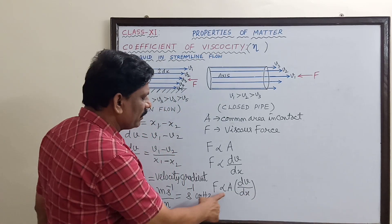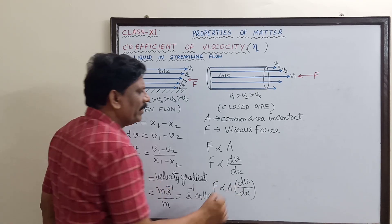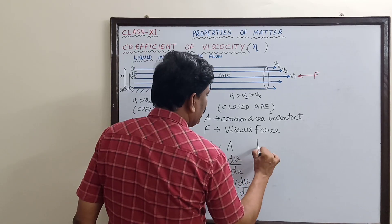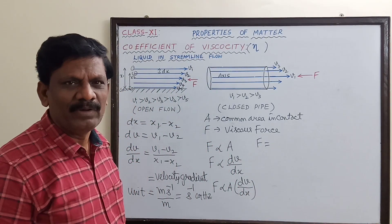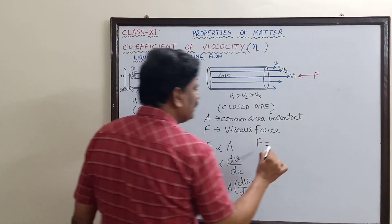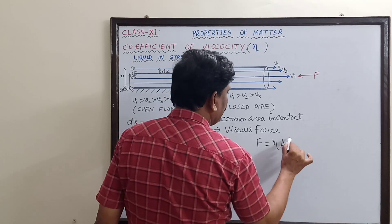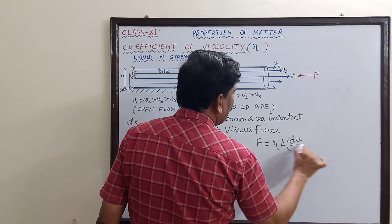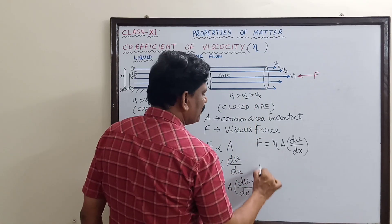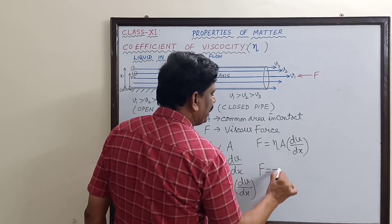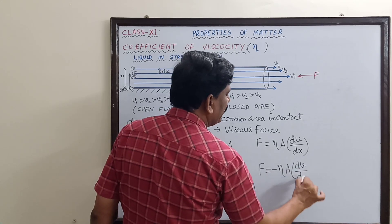So F equals some constant times A · (dv/dx). That constant is eta, so F = eta · A · (dv/dx). Since it is an opposing force, you can also write F = −eta · A · (dv/dx).